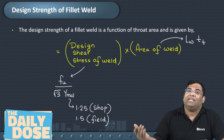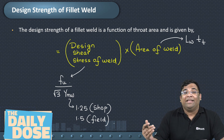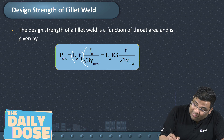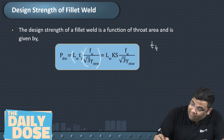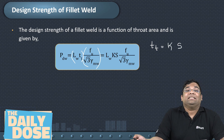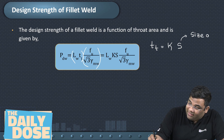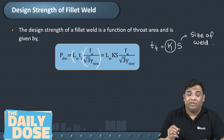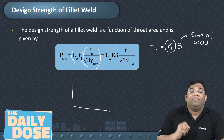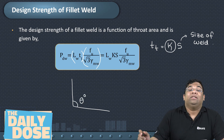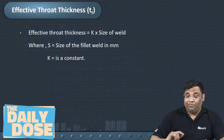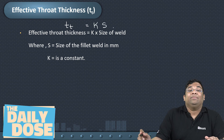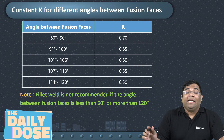This gives us the load carrying capacity of the weld — how much load the weld can carry. The throat thickness is given by k into s, where s is the size of the weld. This k is a factor which depends on the fusion angle between the members being joined.